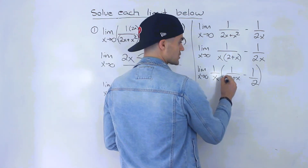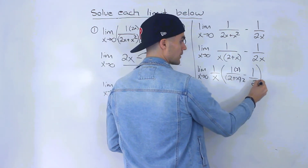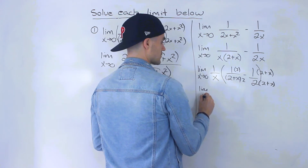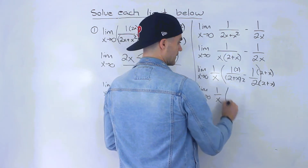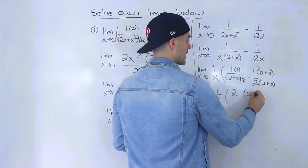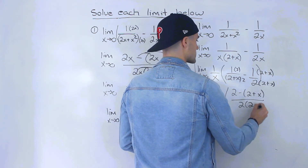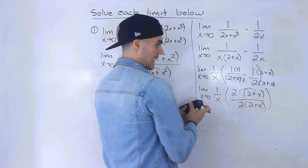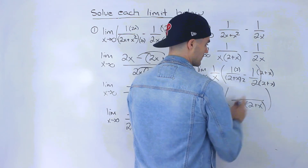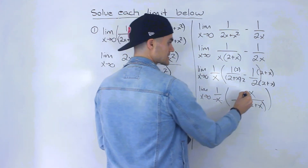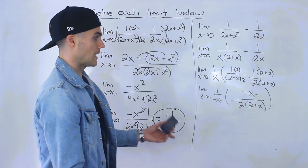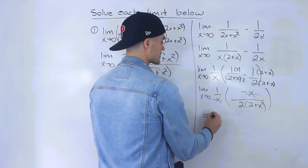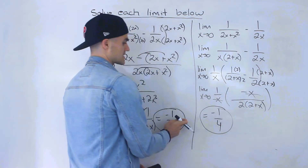Now we combine those two fractions inside the bracket by getting a common denominator: multiply the first by 2 and the second by 2 plus x. This gives the limit as x approaches zero of one over x times 2 minus 2 plus x over 2 times 2 plus x. Distributing the negative, 2 minus 2 is zero, leaving negative x on top. The x and x cancel, and plugging in zero gives negative 1 over 2 times 2, which is negative 1 over 4.